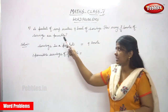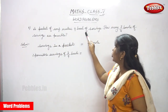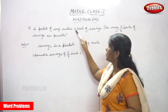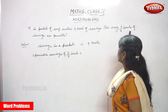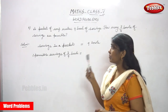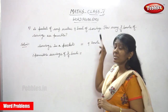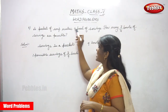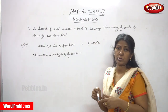Now we are going to solve this. Sixth sum: a packet of soup makes nine bowls of servings. How many three by four bowls of servings are possible? So from one packet, one packet of soup makes nine bowls of serving. Servings in a packet is nine bowls.